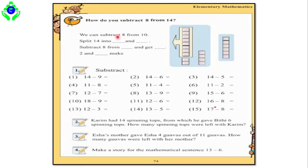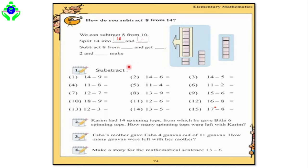But whenever you try to fill the boxes, how can you fill them? First, it is written that we can subtract 8 from 10. Whenever you try to solve this question, the first thing you should do is subtract 8 from 10, and split 14 into two parts. To fill these two boxes, first try to understand: 14 minus 10 equals 4. So you should write 4 here.